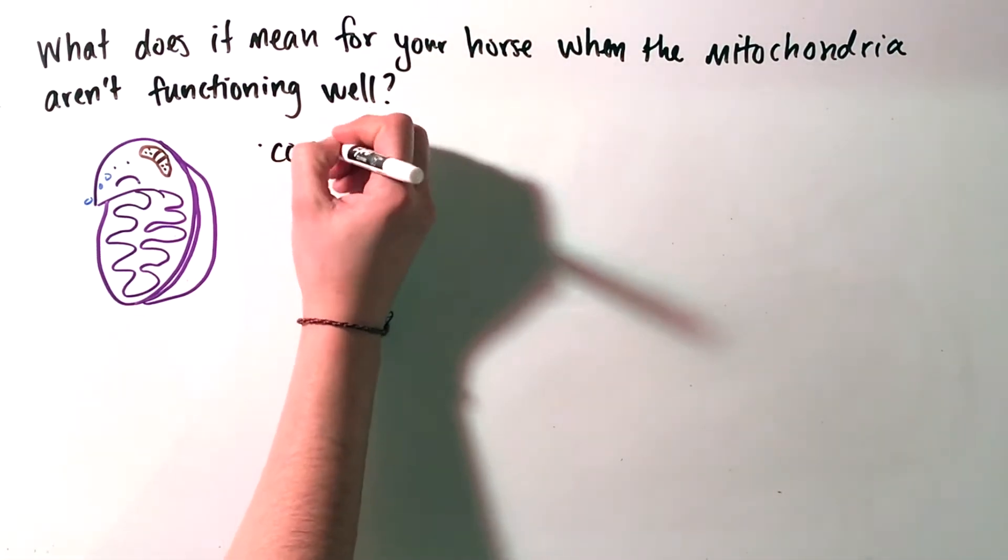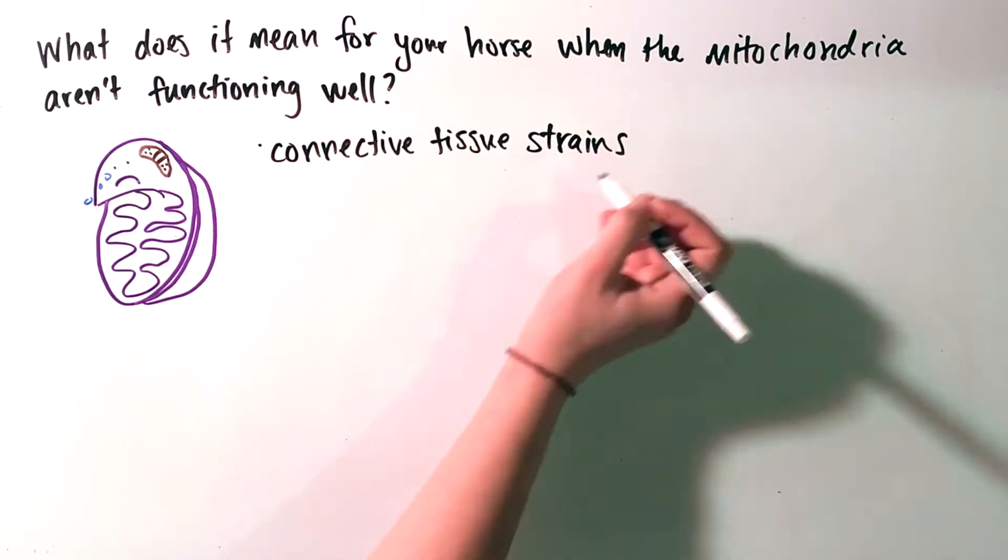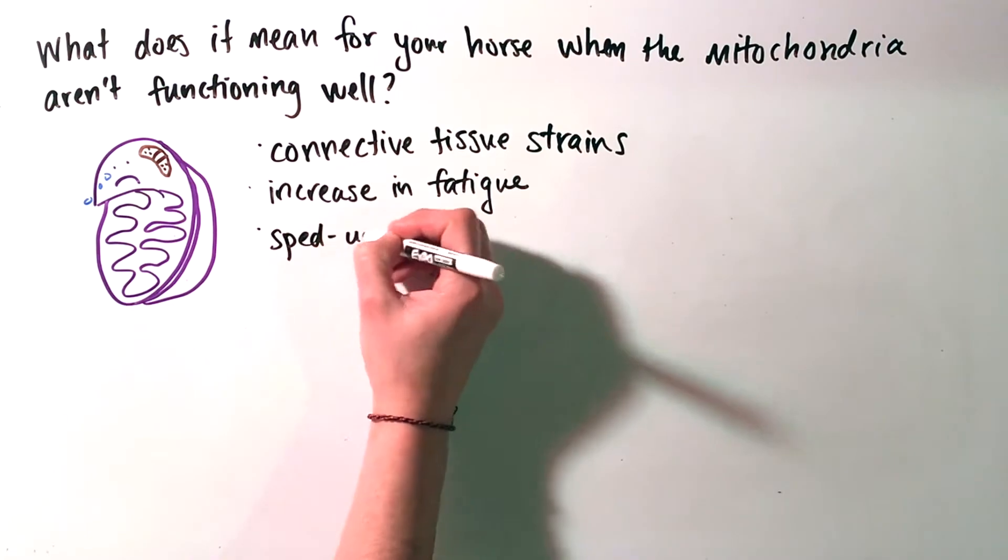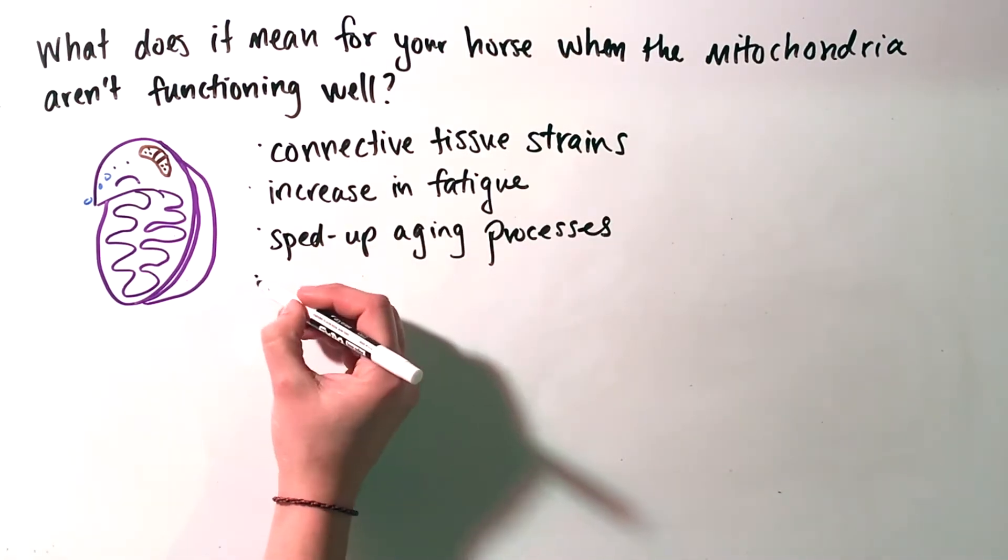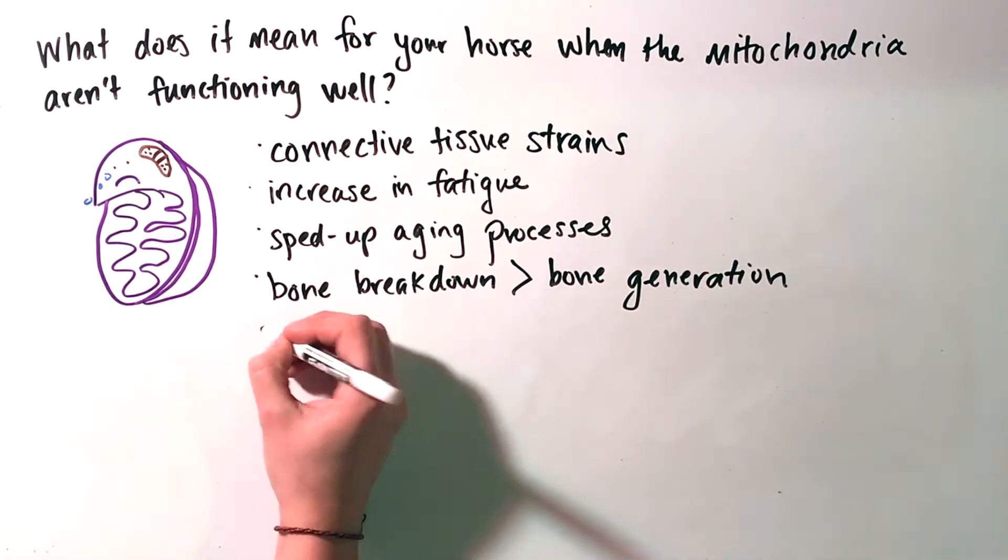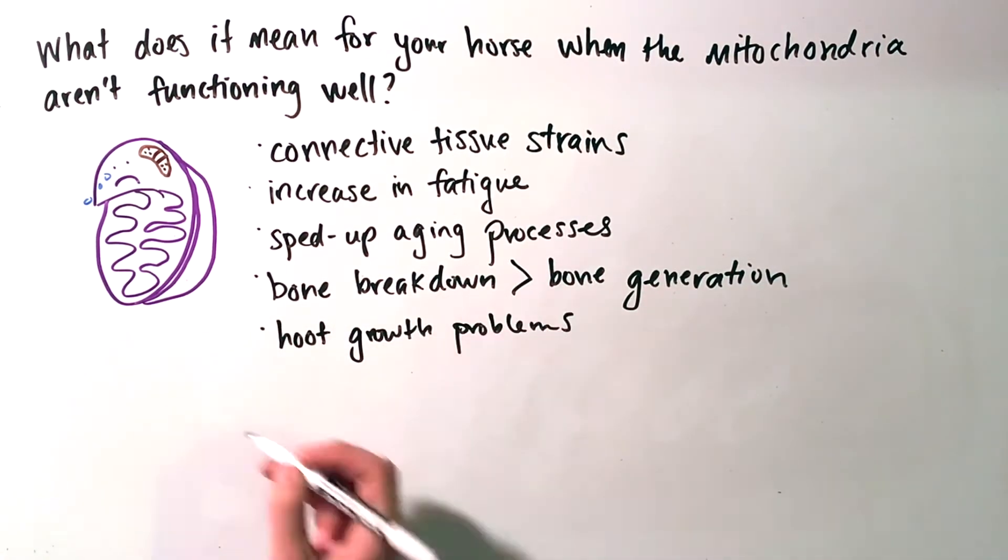Low functioning mitochondria can lead to connective tissue strains, increase in fatigue, sped-up aging processes, bone breakdown occurring more quickly than bone generation, slow hoof growth, and chronic illness.